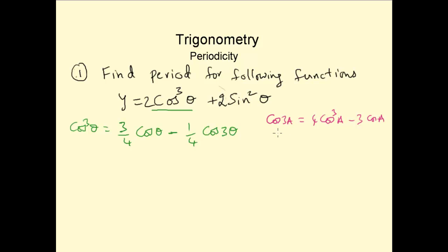And this formula comes from if you separate cos 3a to cos 2a plus a. So this is cos a plus b, that would be cos a cos b, or cos 2a cos a minus sin 2a sin a.